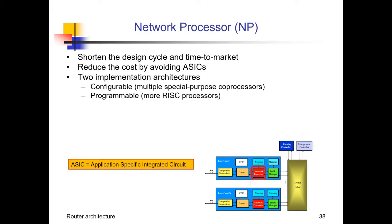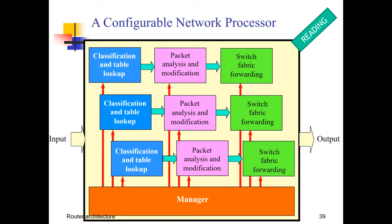The network processor is a critical component. There are two main implementation schemes: configurable or programmable. In the configurable implementation, several blocks each specialized for a specific function — classification block, packet analysis block, switching fabric forwarding block — are coordinated by a manager, and these chains of blocks are replicated to manage several packets simultaneously. This is effective because each block is highly specialized, but requires completely custom hardware.